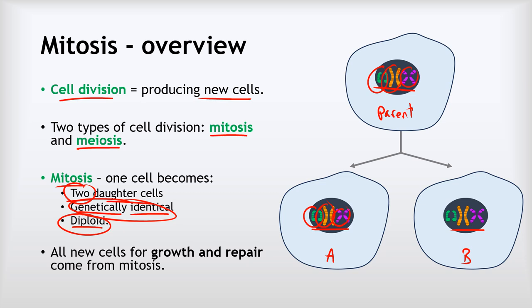All new cells for growth and repair of the body are produced by mitosis, so mitosis is super important. A common confusion is mixing up mitosis with meiosis. A helpful way to remember is 'my two cysts' — mitosis makes two cells, whereas meiosis makes four cells, so that helps you remember which is which.